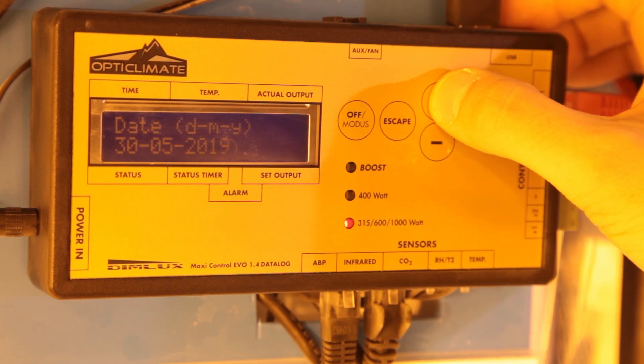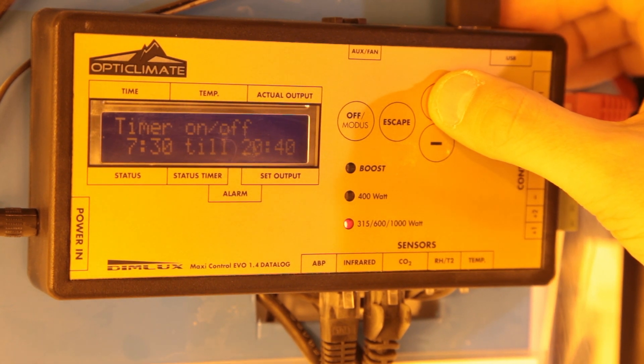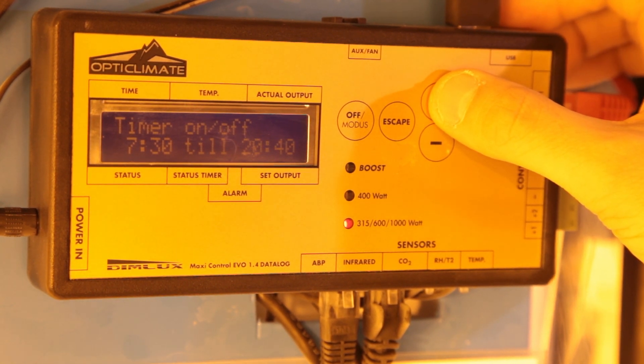The next setting is for the date and the next one is timer and this regulates the switching of your lights. Choose your on and off times and use the mode button to select lights controlled by timer.